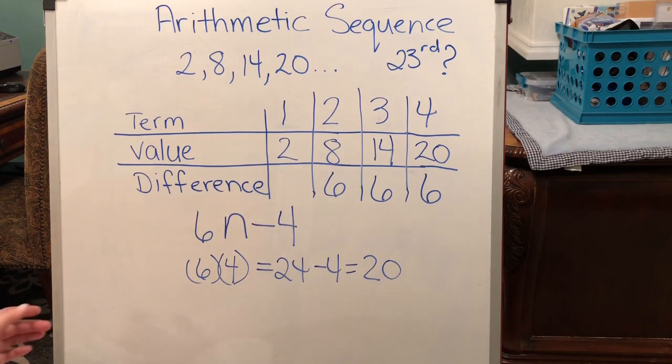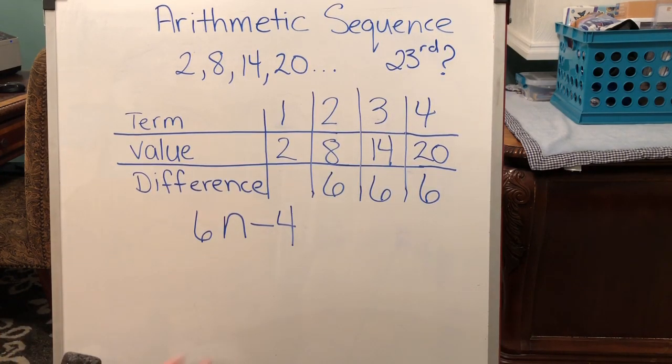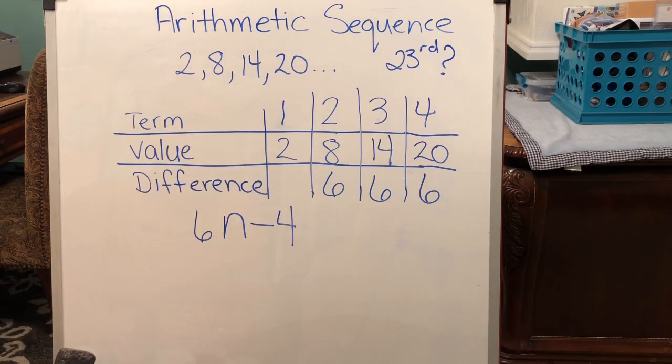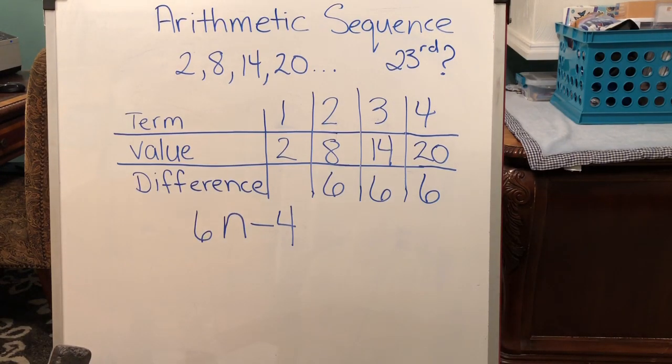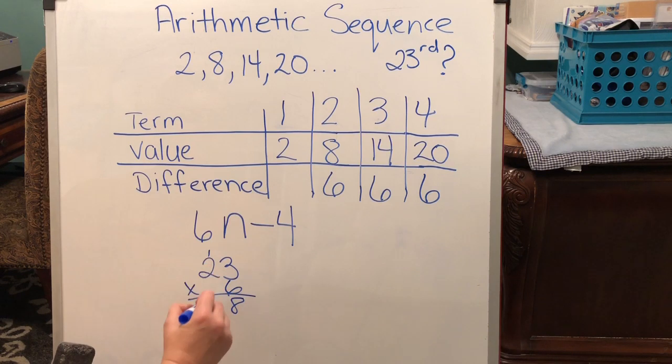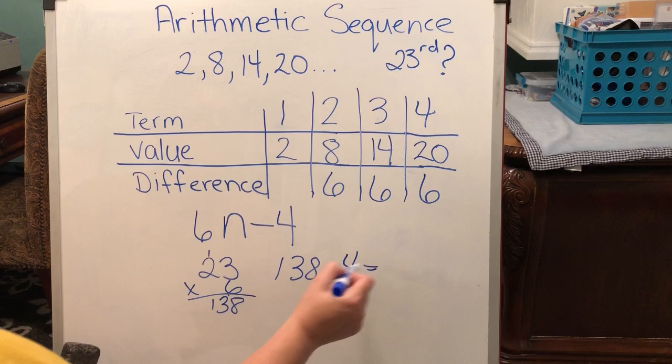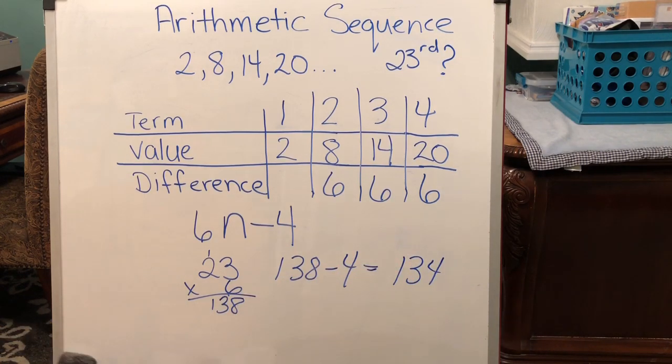So, now I can go ahead and find the term that I want to find. And the original question is, what is the 23rd term to this sequence? And that's easy. I just take 6 times 23 and subtract 4, and I get my answer. So, let's go ahead and do that. 23 times by 6. It's 138. Subtract 4. 134. This is how you solve an arithmetic sequence.